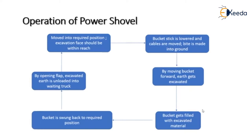The bite is made into the ground with the teeth of the bucket. By moving the bucket forward, the earth gets excavated and the bucket fills with excavated material. The bucket is then swung back to the required position, and by opening the flap of the bucket, the excavated earth is unloaded into the waiting truck.